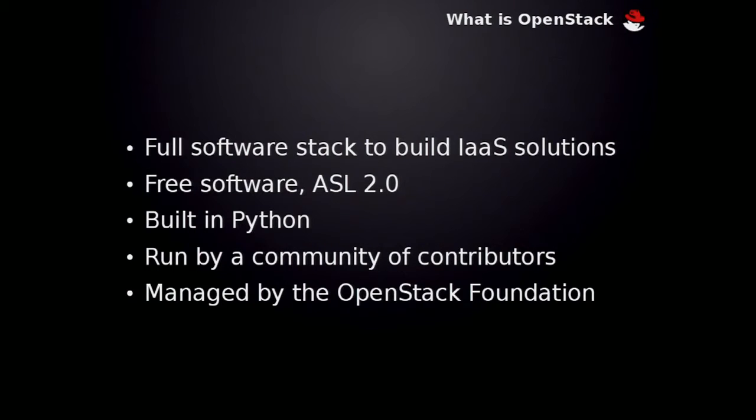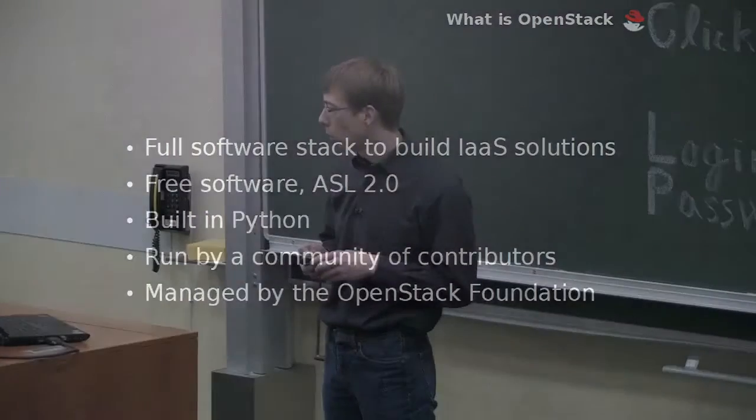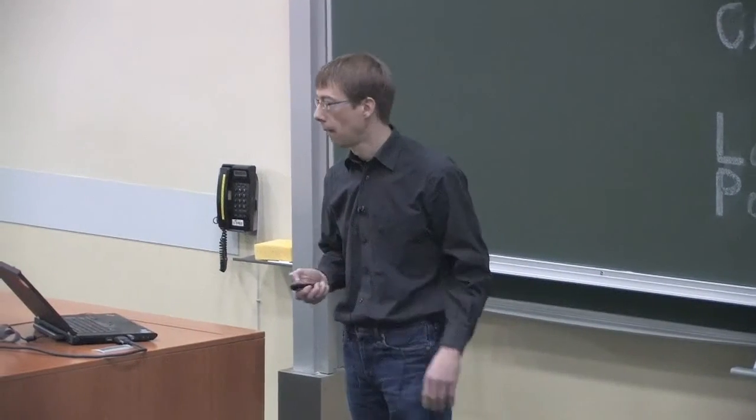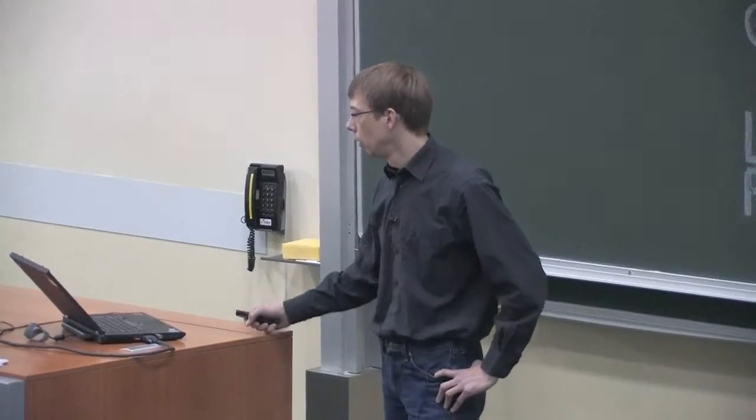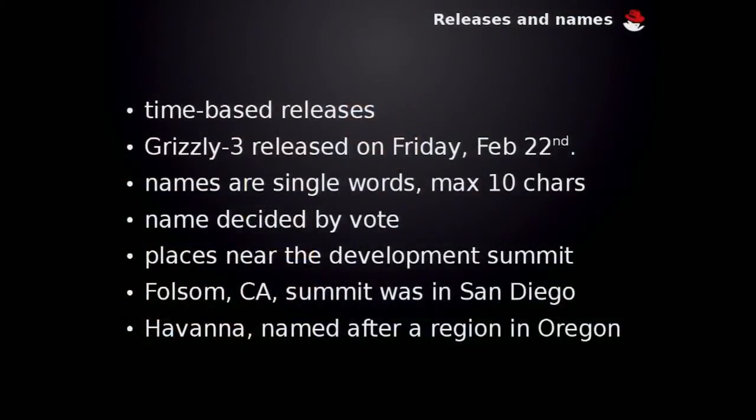And of course, it's free software licensed under the Apache license. It's completely built in Python, which is not completely true. We have some parts in other languages like JavaScript also, but under 5%. It's run by a community of contributors. And to get a roof above this, we have the OpenStack foundation for marketing and so on. We do time-based releases. The eighth release will be released in April. And the latest snapshot for the Grizzly release was released on Friday, so it's really fresh.